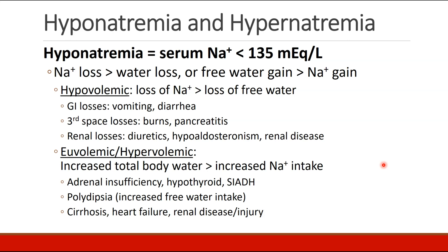Hyponatremia is when serum sodium is less than 135 milliequivalents per liter. It can be caused when sodium losses exceed water losses, or when free water gain exceeds sodium gain. So we see there are two subcategories of hyponatremia: hypovolemic and hypervolemic.